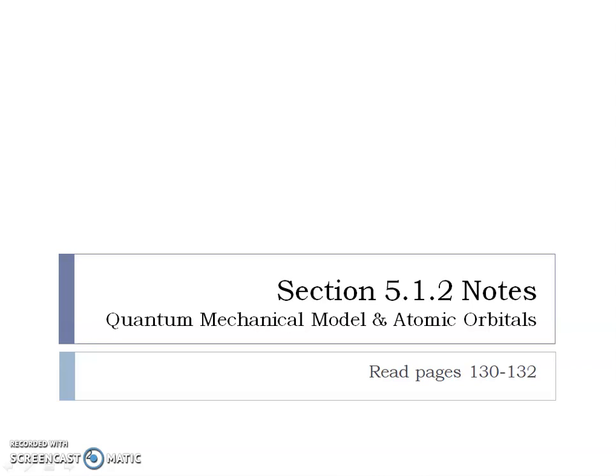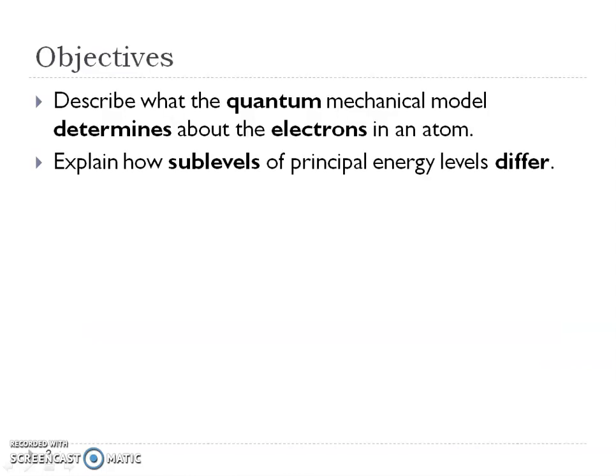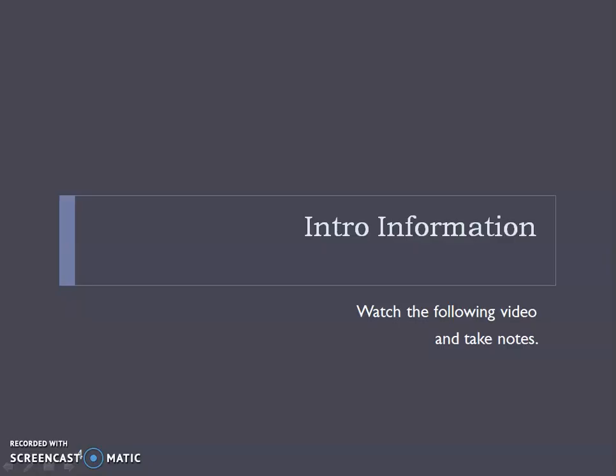This is Mrs. O'Neill for Chapter 5, Section 1, Part 2: Quantum Mechanical Model and Atomic Orbitals. You're going to be able to describe what the quantum mechanical model determines about the electrons in that atom, and how these sublevels in the energy levels differ from each other.